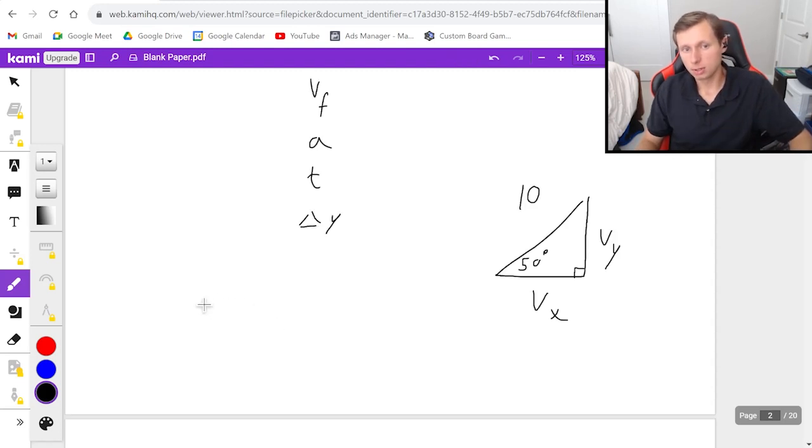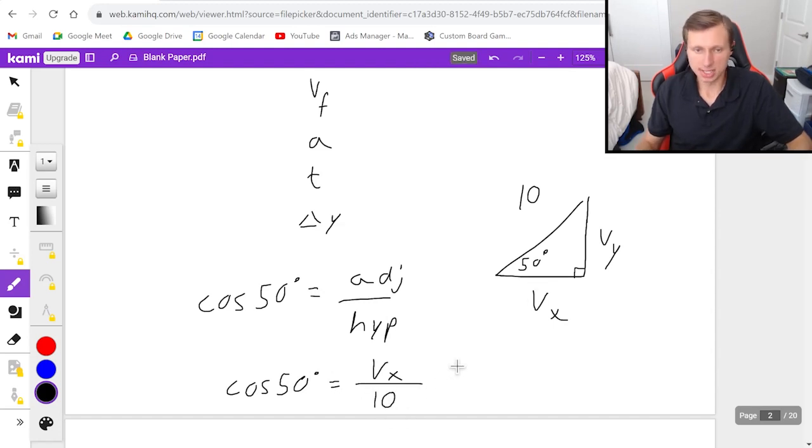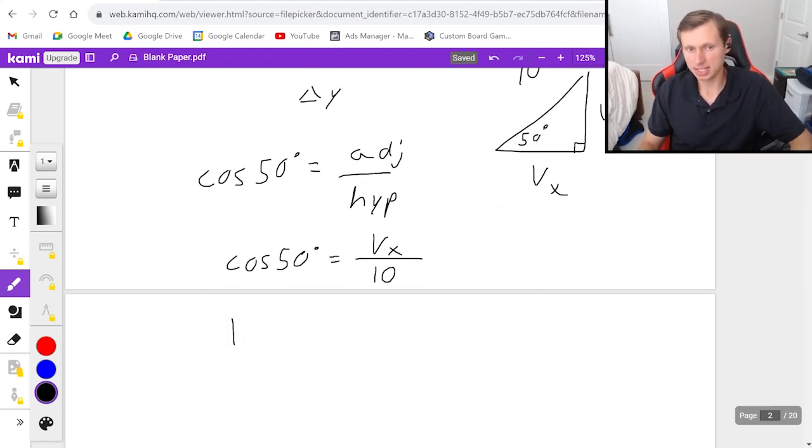So if you remember what cosine is, the cosine of 50 degrees, cosine is always adjacent over the hypotenuse. And so the cosine of 50 is going to be adjacent, which is vx, because it's next to the angle, and then divided by the hypotenuse, which is 10. If I want to solve for vx now, I just multiply both sides by 10, and vx equals 10 cosine of 50 degrees. Now, I plug this in my calculator, and let's see what I get. I got vx equals 6.43, and that's meters per second.